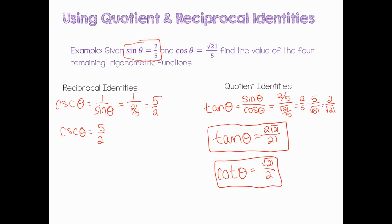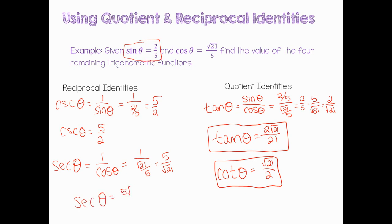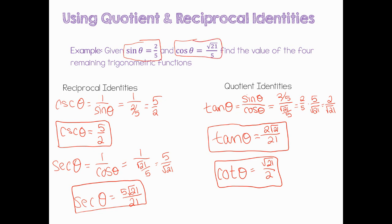We also have cotangent — you could do cosine over sine as well. We're missing secant. Secant of theta equals 1 over cosine of theta, so we have 1 over (√21/5), which is 5/√21. We always rationalize the denominator, so secant of theta equals 5√21/21. Now we have all six trig functions: sine, cosine, tangent, cosecant, cotangent, and secant.